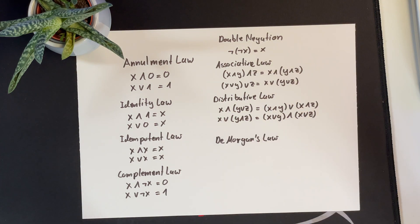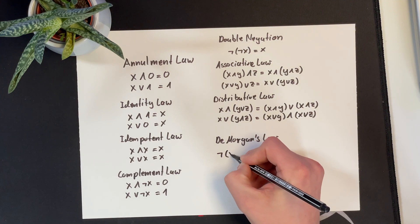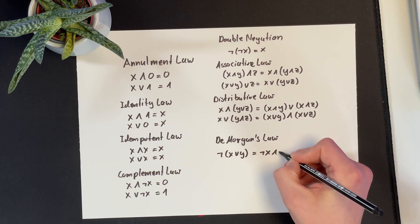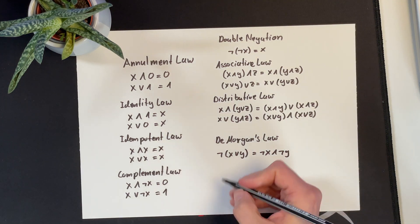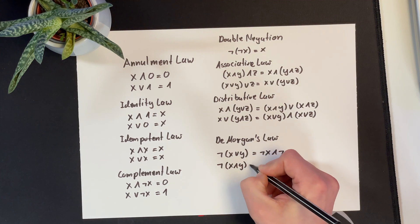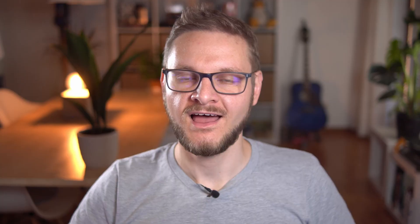The last and probably most impressive law is De Morgan's law, which states that NOT(X OR Y) equals NOT X AND NOT Y, and NOT(X AND Y) equals NOT X OR NOT Y. We can now use these Boolean laws to show the equality of different Boolean algebra expressions without using truth tables.